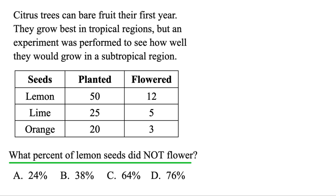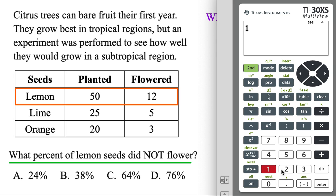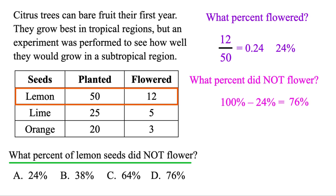What percent of lemon seeds did not flower? We're only interested in the lemon ones — 50 were planted and only 12 flowered. So it's actually much easier to find what percent did flower. We're using that data: 12 flowered out of 50. We'll do 12 divided by 50, which equals 0.24 — the same thing as 24%. Next we're going to find what percent did not flower, because there's only two options. If 24% flowered, the rest of them did not. So just subtract that out of 100, and that'll leave us with 76% that did not flower. You could also do 50 minus 12 equals 38, divide that by 50, and that's another way to get 76.